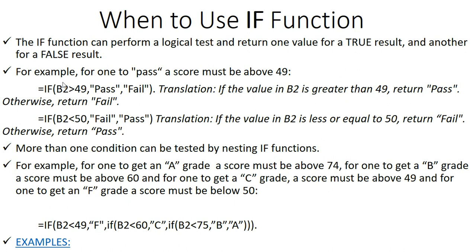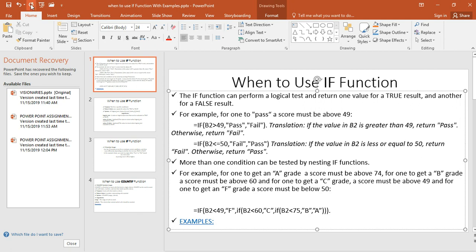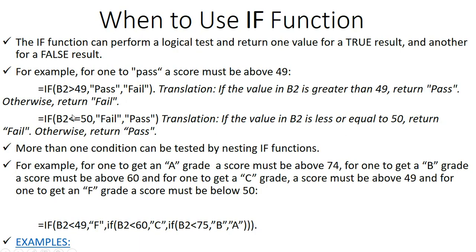If this condition is true, we return 'pass'; if this condition is false, we return the second result. Observe the difference here — we can also use a less-than sign. We're saying: if the value in B2 is less than or equal to 50, it's a fail; otherwise it's a pass.